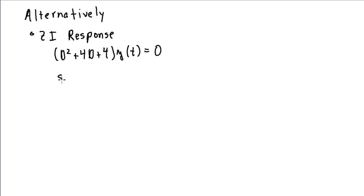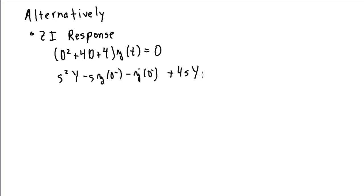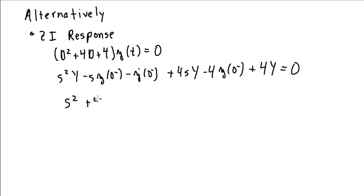Taking the Laplace transform with the RHS set to zero: the second-order derivative gives s²Y − s·y(0⁻) − y'(0⁻). The 4d term gives 4sY − 4·y(0⁻). The 4y term gives 4Y. Setting this equal to zero and gathering the Y terms gives (s² + 4s + 4)Y.